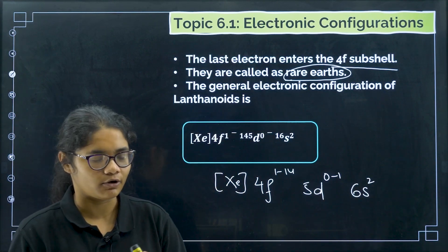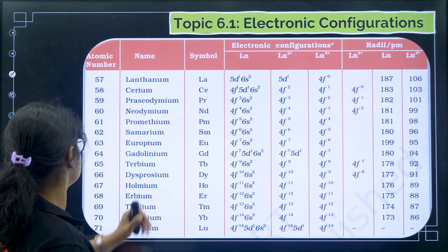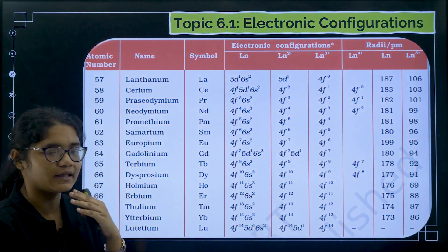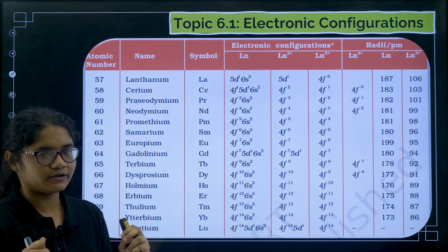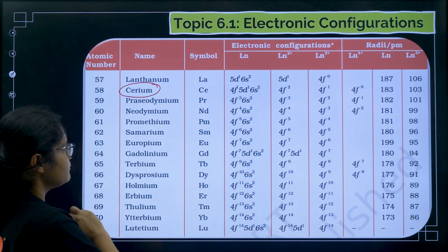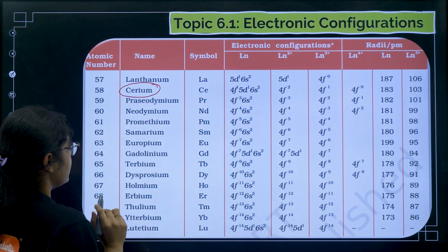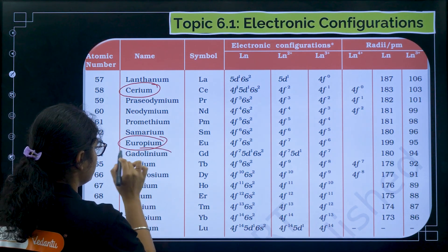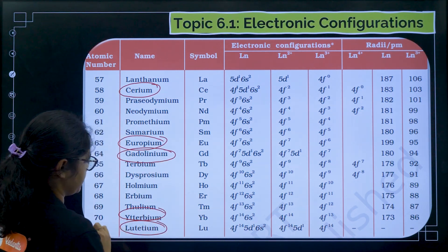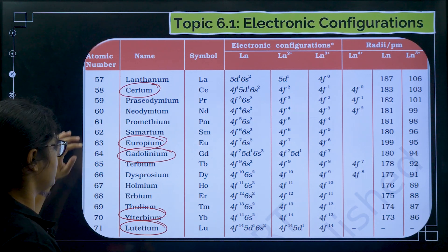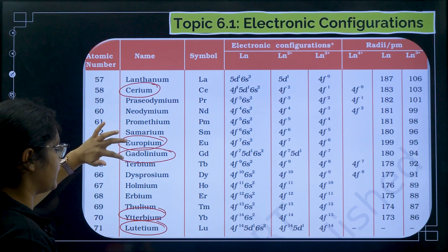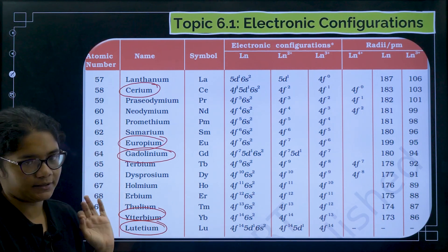You can see the electronic configurations of different elements here. You do not need to remember all of them — only certain elements: Cerium, Europium, Gadolinium, Ytterbium, and Lutetium. I recommend you remember the electronic configurations of these five elements.